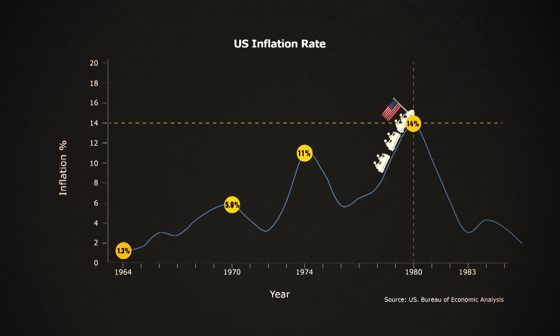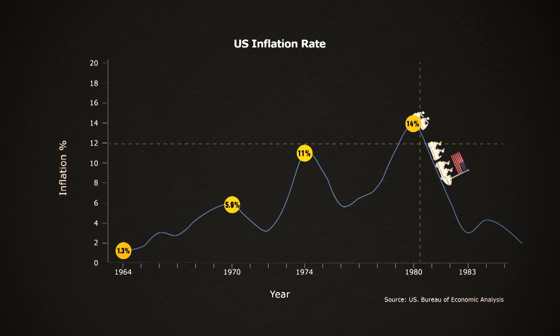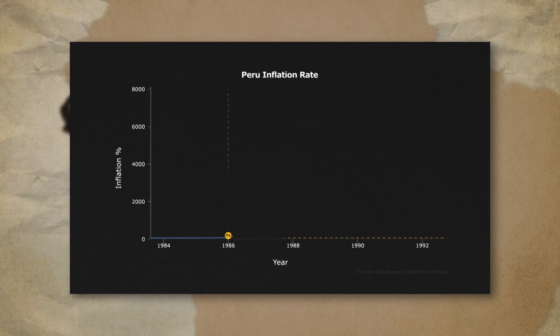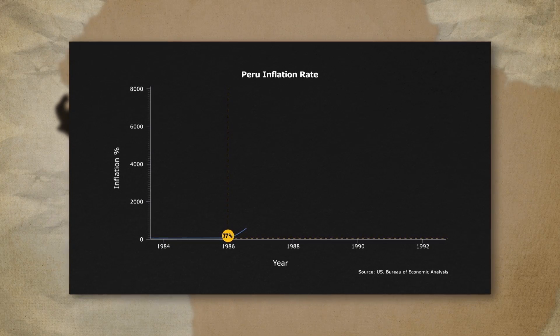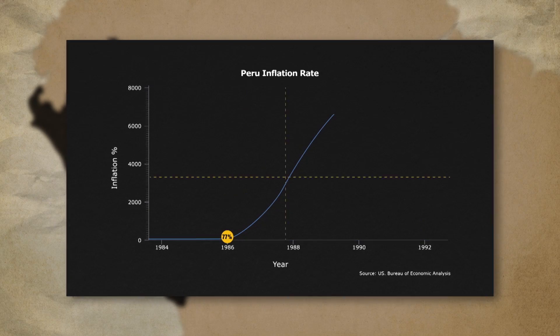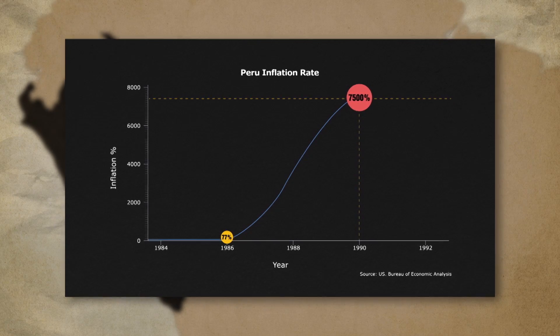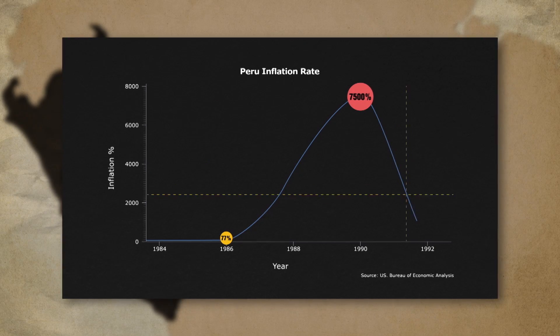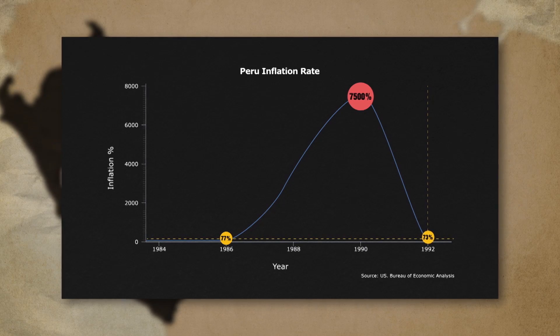Then inflation went from 14% in 1980 to 3% in 1983, and again people were surprised. And these changes were mild. In Peru, the inflation rate was 77% in 1986, but then just four years later, the inflation rate was running at 7,500% per year before falling back to 73% by 1992.